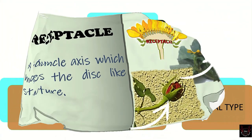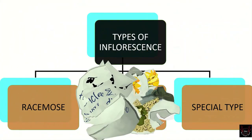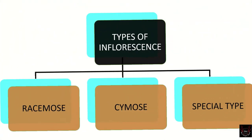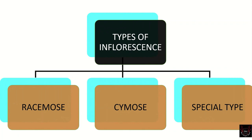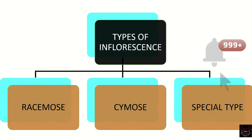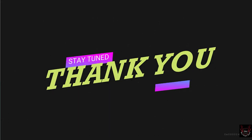Receptacle is actually a peduncle axis which makes a flat disc-like structure. Generally, there are two types of inflorescence: racemose and cymose. In addition to these, there are some special types as well, which we will cover in the next video. Make sure you have pressed the bell icon. Thank you for watching!